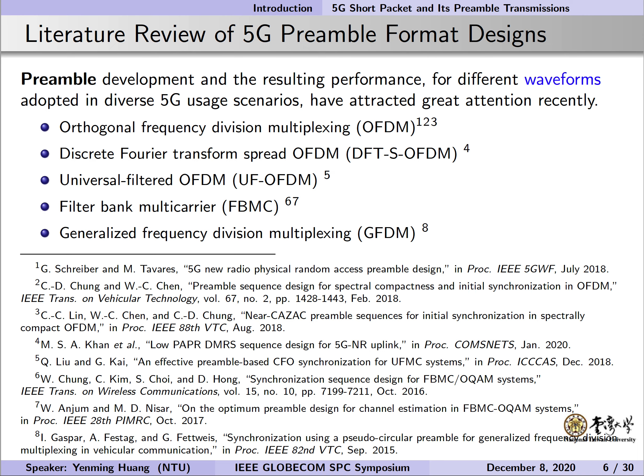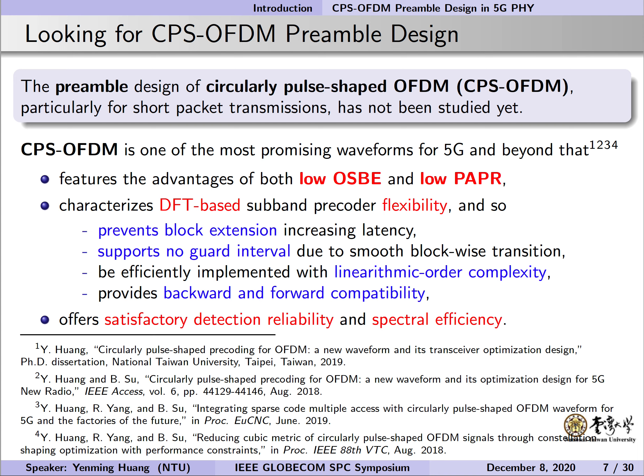In recent years, preamble design for 5G OFDM-based systems has attracted great attention. In the current literature, we can find preamble development for the following waveforms: OFDM-DFTS, OFDM-UF, OFDM-FBNC, and GFDM. Most of them desire near-zero periodic autocorrelation and constant amplitude properties on the basis of Zadoff-Chu sequences. However, the preamble of CPS-OFDM has not been studied yet. CPS-OFDM is one of the most promising waveforms for 5G and beyond, with the advantages of low OSBE, low PAPR, and DFT-based subband precoder flexibility. This is quite suited for short-packet transmissions, since unlike windowed OFDM and filtered OFDM, it can prevent block extension and be free from the use of guard interval. Smooth block-wise transition may alleviate inter-block interference at the receiver. Interested audiences may refer to our previous papers shown at the bottom of this slide.